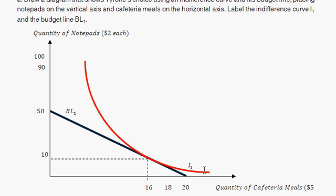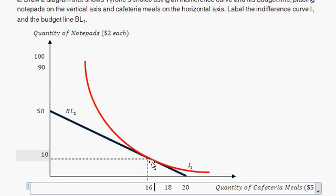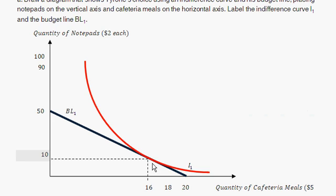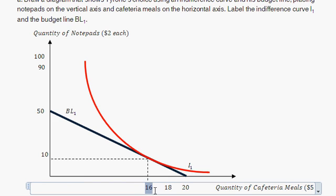Now the indifference curve. We're told Tyrone maximizing his utility ends up with 10 notepads and 16 cafeteria meals, so we place the indifference curve tangent to the budget line at that point. We can verify this is on the budget line: 10 notepads × $2 = $20, leaving $80, and $80 ÷ $5 = 16 cafeteria meals. So Tyrone uses up all $100 buying 10 notepads and 16 cafeteria meals, with the indifference curve exactly tangent to the budget line.